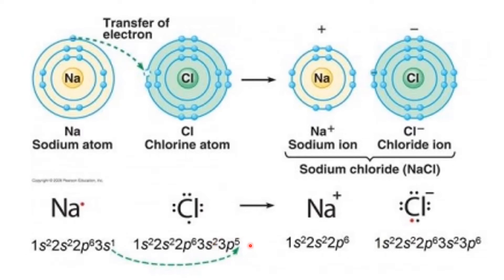Chlorine has 7 valence electrons and sodium has 1 valence electron, but all elements try to become stable by having 8 electrons in their outermost shell. If sodium loses its 1 electron, it will have 8 electrons in its outermost shell. It would be difficult for sodium to gain 7 electrons, so it is easier for sodium to lose 1 electron. If chlorine takes 1 electron from somewhere, it will get 8 electrons in its outermost shell and become very stable.